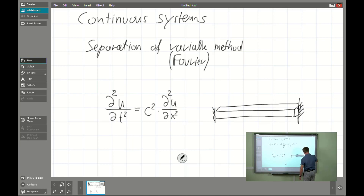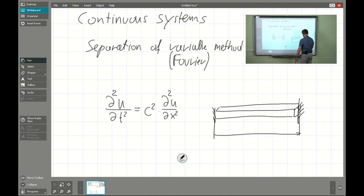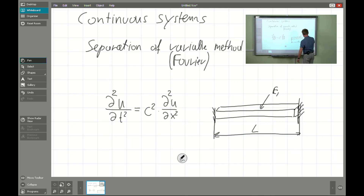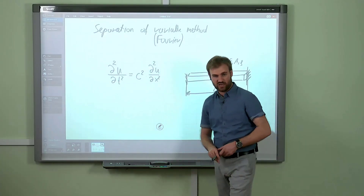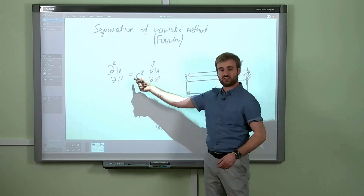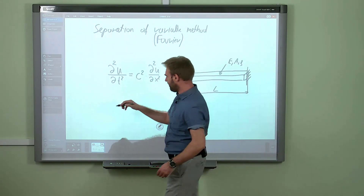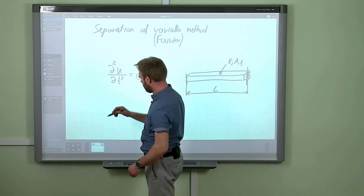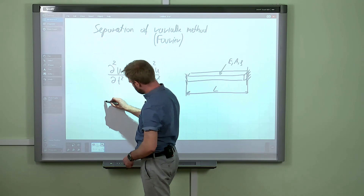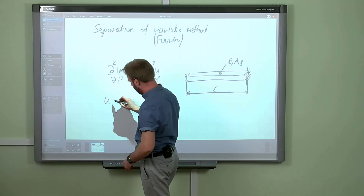We have a rod which will be fixed at both ends. Here we have the fixation of the second end, and if we want to deal with that we have to put some numbers — the Young's modulus, the area of the cross-section, and the density. With such a problem we are able to find the stationary solution if we assume it has a product form.